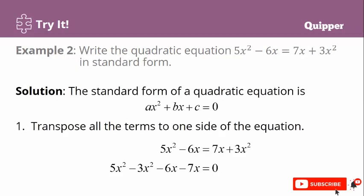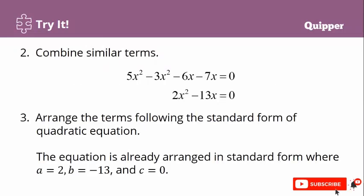Time's up. Here is the solution. Note that the standard form of a quadratic equation is ax² plus bx plus c equals 0. First, transpose all the terms to one side of the equation. From 5x² minus 6x equals 7x plus 3x², we get 5x² minus 3x² minus 6x minus 7x equals 0. Second, combine similar terms: 5x² minus 3x² is 2x², and negative 6x minus 7x is negative 13x. We now have 2x² minus 13x equals 0. Since it is already in standard form, we can identify: a is equal to 2, b is equal to negative 13, and c is equal to 0, since there is no constant term.